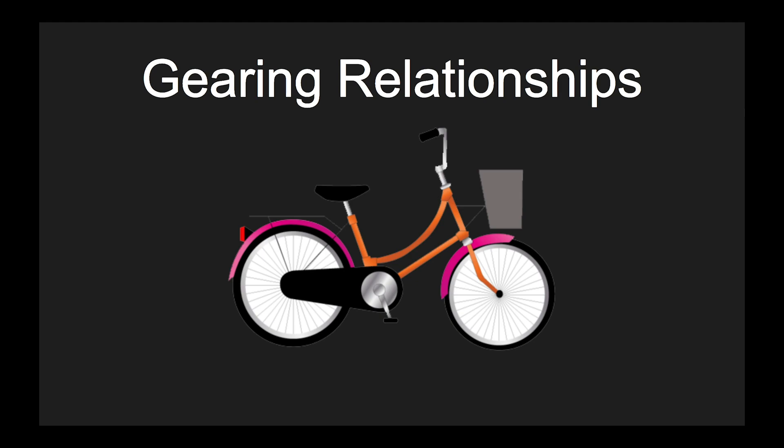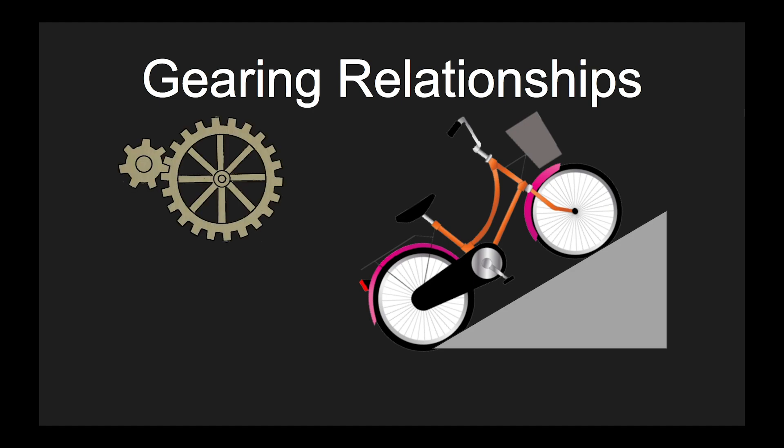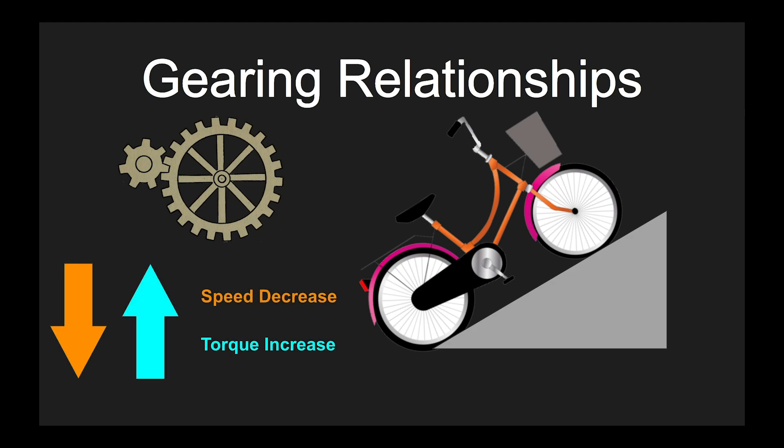We use gears in many mechanisms — for example, your bicycle. When you want to go up a hill you drop into a low gear. This is a small gear that for every turn you produce will turn the wheels less. It goes slower but the strength is increased to get you up the hill. This is a mechanical advantage that makes it easier for you to pedal on a hard hill.